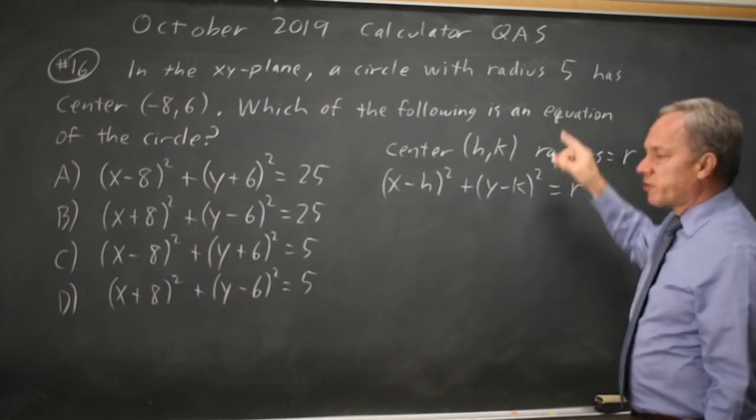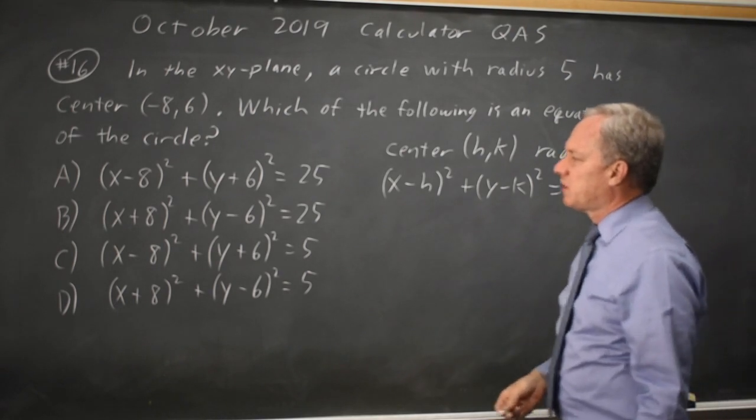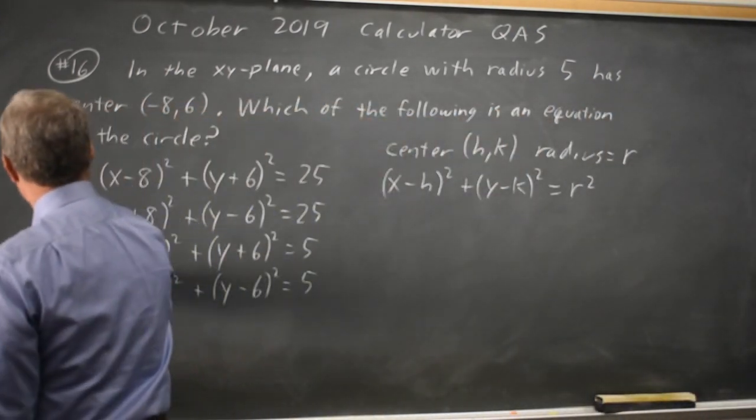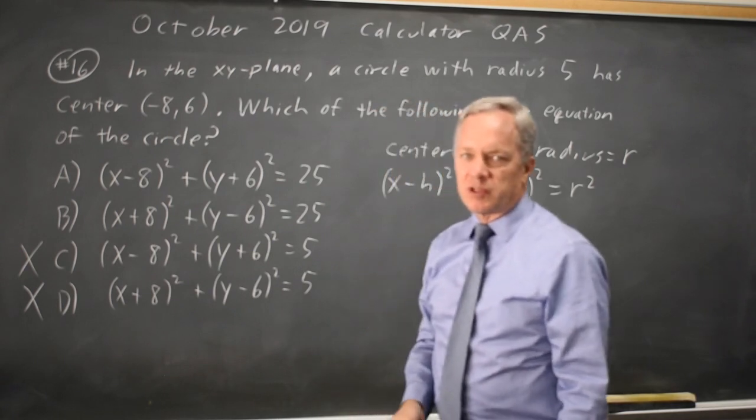So if r is 5, my right-hand side is supposed to be 25, which rules out choice c and choice d that only have a 5 on the right.